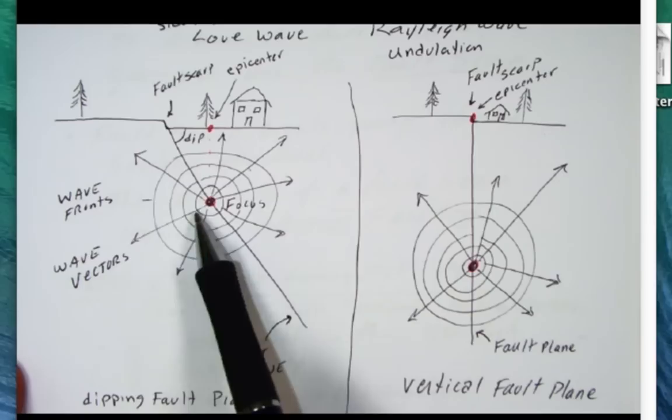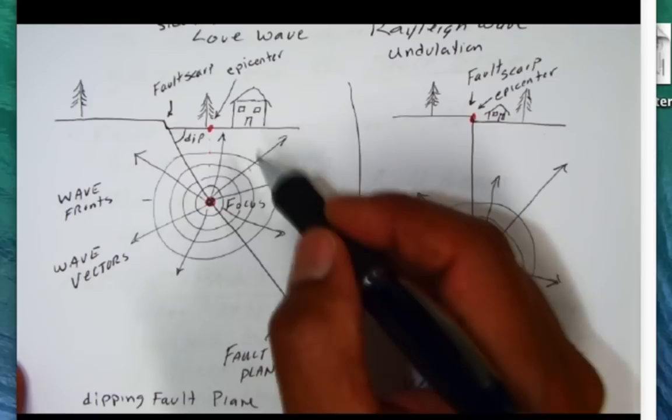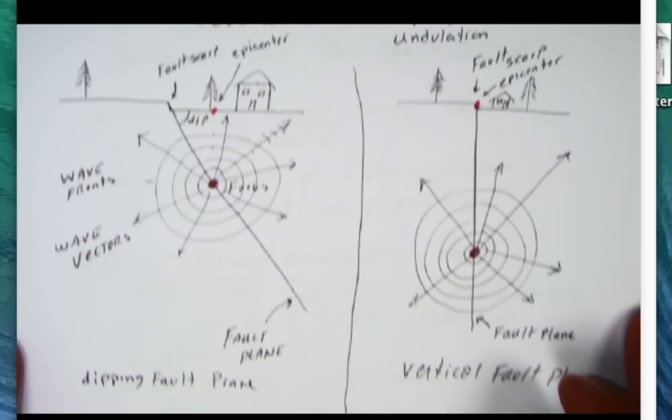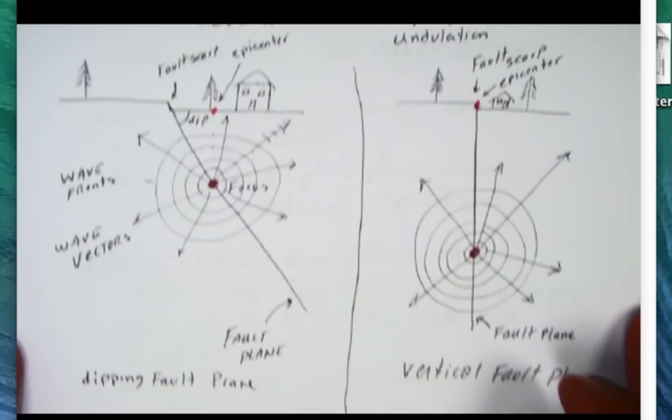You could show these vectors. The key thing about vectors, they show the direction and the relative strength of the waves. Along the vectors, there's really wave fronts that are going to be perpendicular to them. That's one way we characterize how the seismic waves are moving from the focal point.